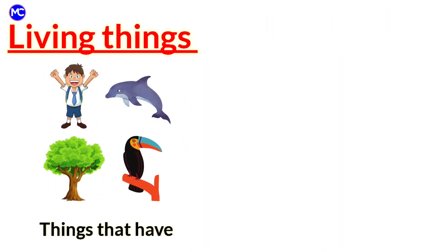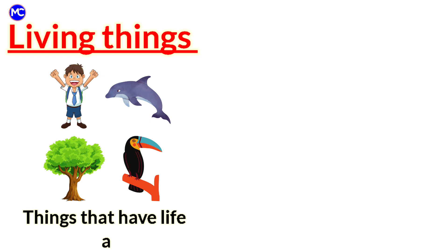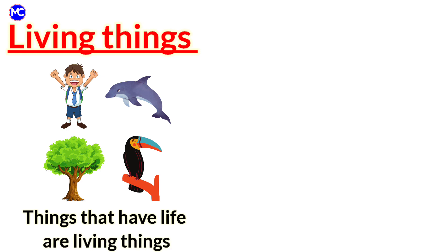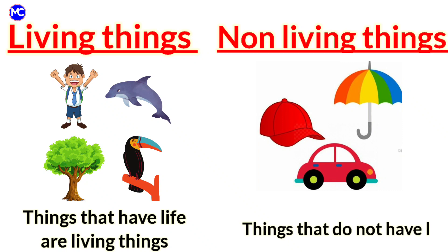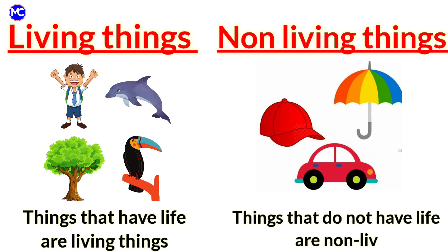Things that have life are living things, like human beings, animals and trees. Things that do not have life are non-living things, like umbrella, car and cab.